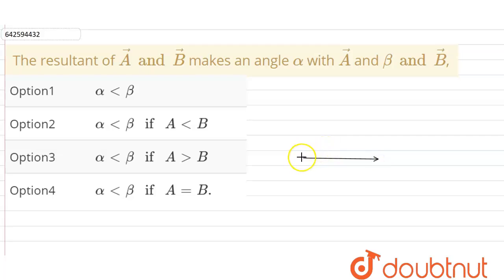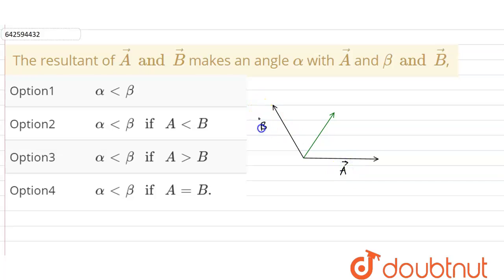Let us suppose this is our A vector, this is the B vector, and the resultant of A and B is represented by this. So this is the A vector, this is the B vector, and this is the resultant vector. The resultant vector makes angle alpha with the A vector and angle beta with the B vector.